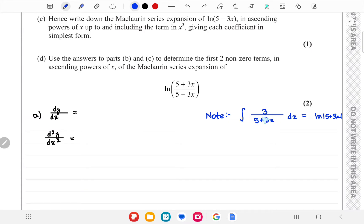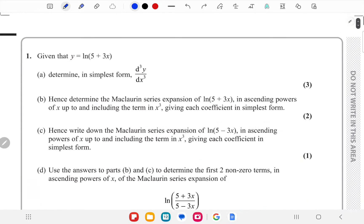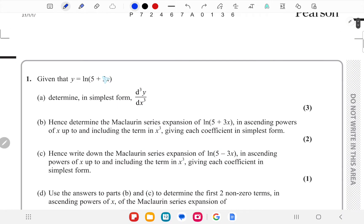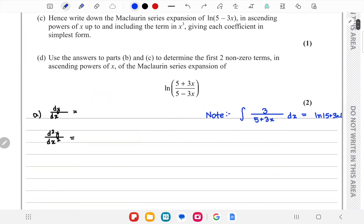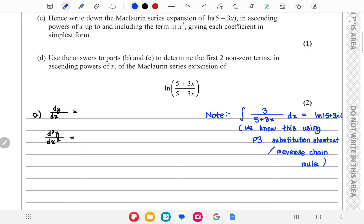You would have learned this in P3. It's known as the substitution shortcut or reverse chain rule. If you haven't looked into it, at first we have to find dy/dx, so it's just going to be this expression over here.